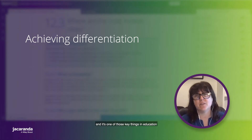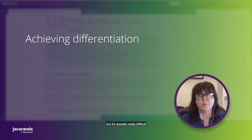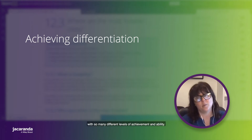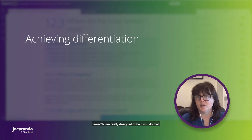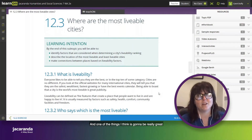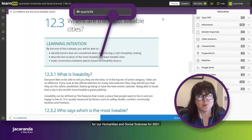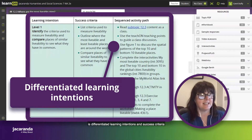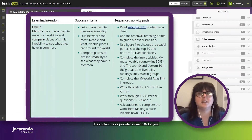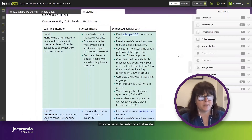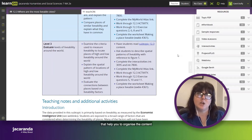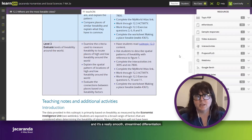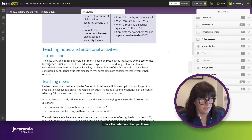The third thing we're going to talk about is achieving differentiation. It's one of the key things in education at the moment, but it's actually really difficult to implement in a classroom with so many different levels of achievement. Some of the features embedded into LearnOn are really designed to help you do that. Coming up in our Western Australian edition for Humanities and Social Sciences 2021, in the Teach On tab you'll find differentiated learning intentions, success criteria, and activity paths that help you navigate all of the content at three different levels of complexity and achievement, providing specific pathways to organize content and plan your curriculum.